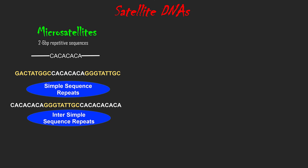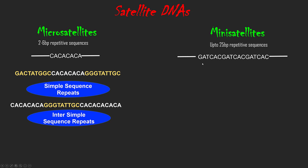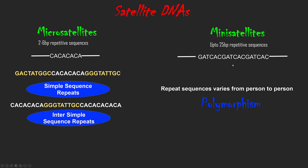Next, let's discuss minisatellite. Minisatellite is a tandem repetitive sequence of up to 25 base pairs. For example, GATCAC is a sequence that repeats 3 times in one person. These repeat sequences can vary from person to person, and these variations are known as polymorphism. That means at a particular locus of a chromosome, if you have a sequence repeated 8 times, the same locus in another person may have that sequence repeated only 3 times. These repeat variations mainly allow us to perform DNA profiling and DNA fingerprinting.